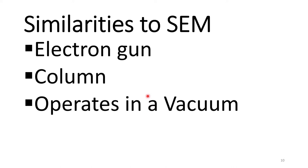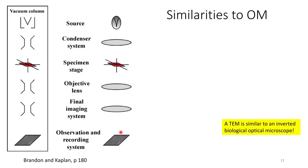Similarities to scanning electron microscopy: you have an electron gun, a column, and it operates in very high vacuum. Similarities to optical microscopy: if you look at this schematic from Brandon and Kaplan, we have our electron gun, different apertures, where our specimen lives, magnetic lenses, and our recording plane. A TEM is basically just an inverted biological optical microscope. In fact, the design of the TEM was based on a biological optical microscope because that's all the early designers had to go on.